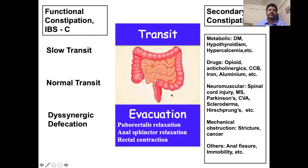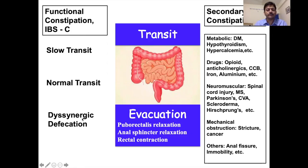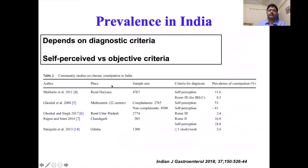If the evacuation apparatus is not coordinating properly — for example, the rectum is contracting but the sphincter is not relaxing — there is a dyssynergia between the structures and the person is unable to pass stool; these conditions are called dyssynergic defecation disorders. In some patients, transit and evacuation may both be normal; these are called normal transit constipation.